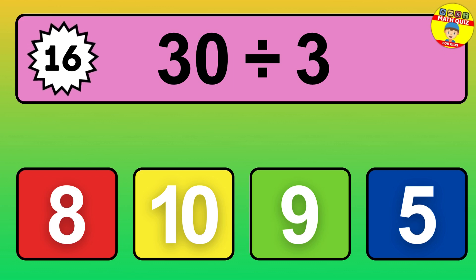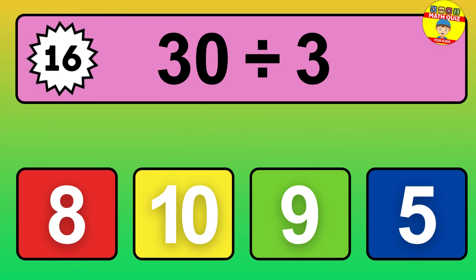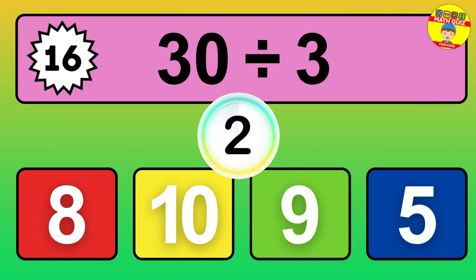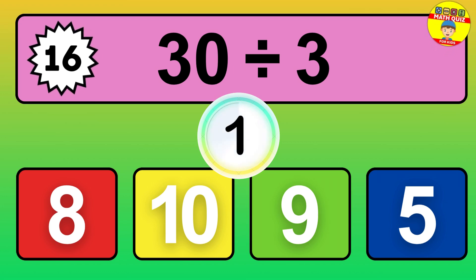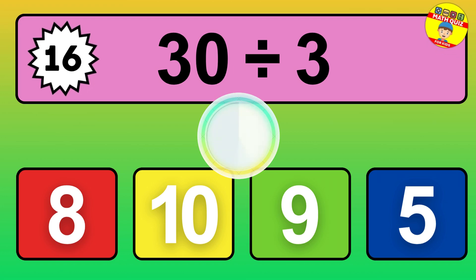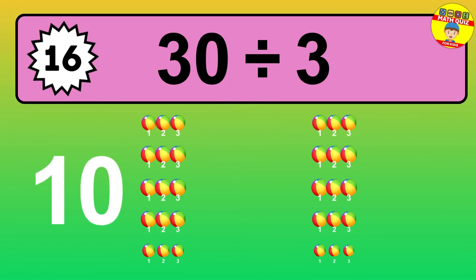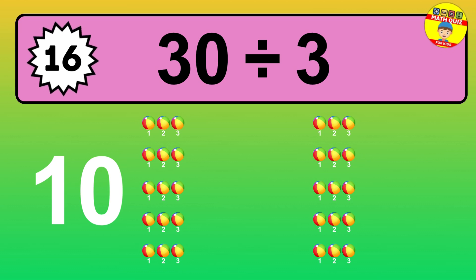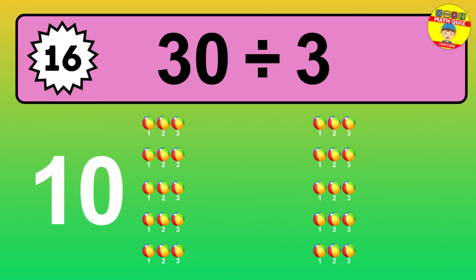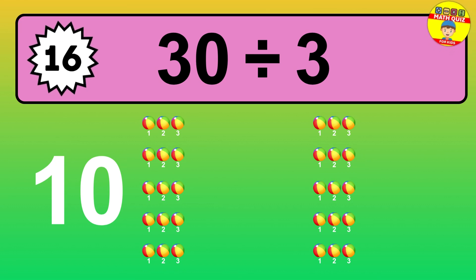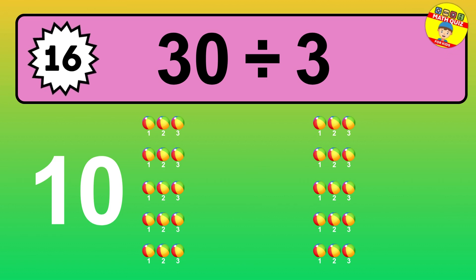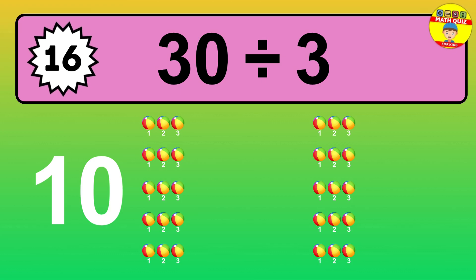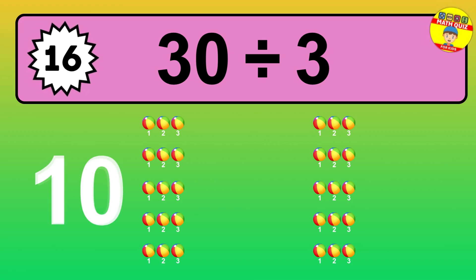What is 30 divided by 3? Picture this: you have 30 objects to divide into groups of 3. How many groups can you make? Let's think about it. Ready to find out? Let's break it down. Let's imagine you have 30 objects. Can you picture them lined up? Now, think about splitting them equally into smaller groups of 3.